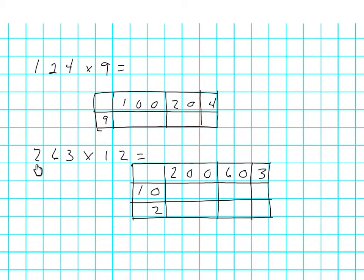In this one we have 263 multiplied by 12, so we have again 263 and the 12 we've partitioned into 10 and 2. Now the grid method can be a little bit tricky, not so much for the math but working out how big the boxes need to be. I may find that I haven't left myself enough space but we'll find out.